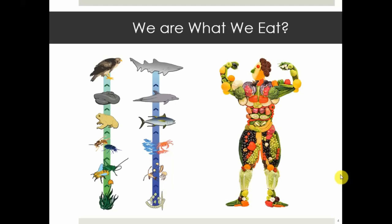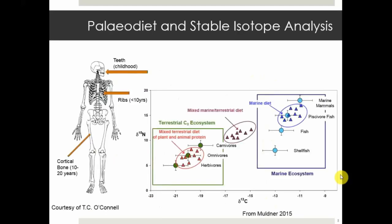When looking at paleodietary studies and stable isotope analysis, what can we actually get out of this? What I'm doing in my research is multi-tissue proxies — taking several different snapshots into a person's life and their diet. I'm particularly taking teeth and ribs, and some people also look at cortical bones, so you have to be careful when comparing studies.